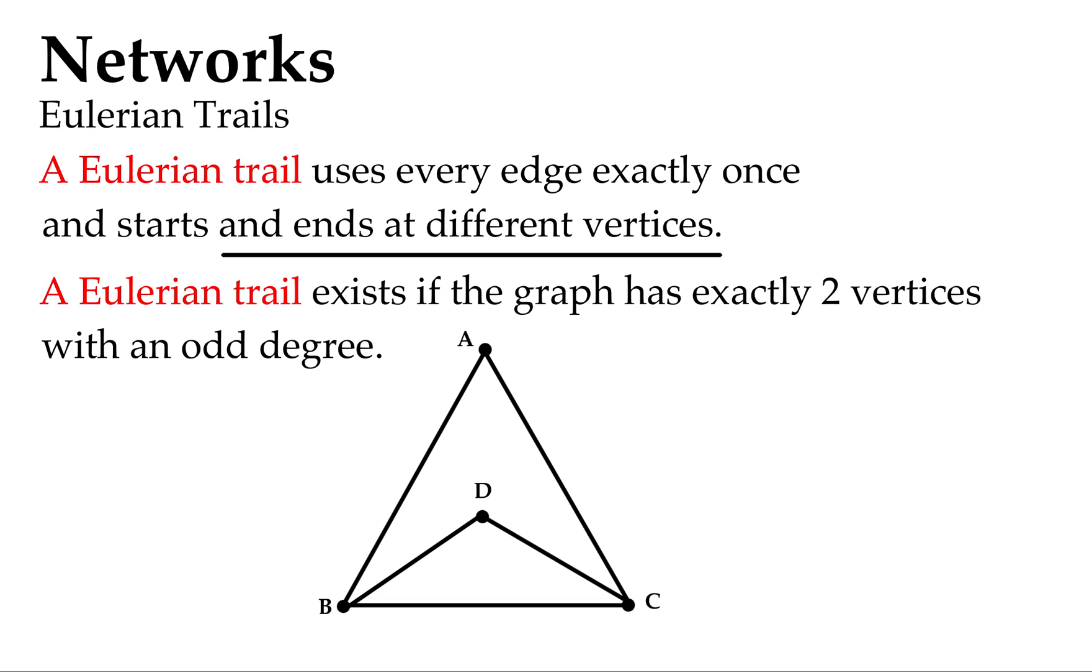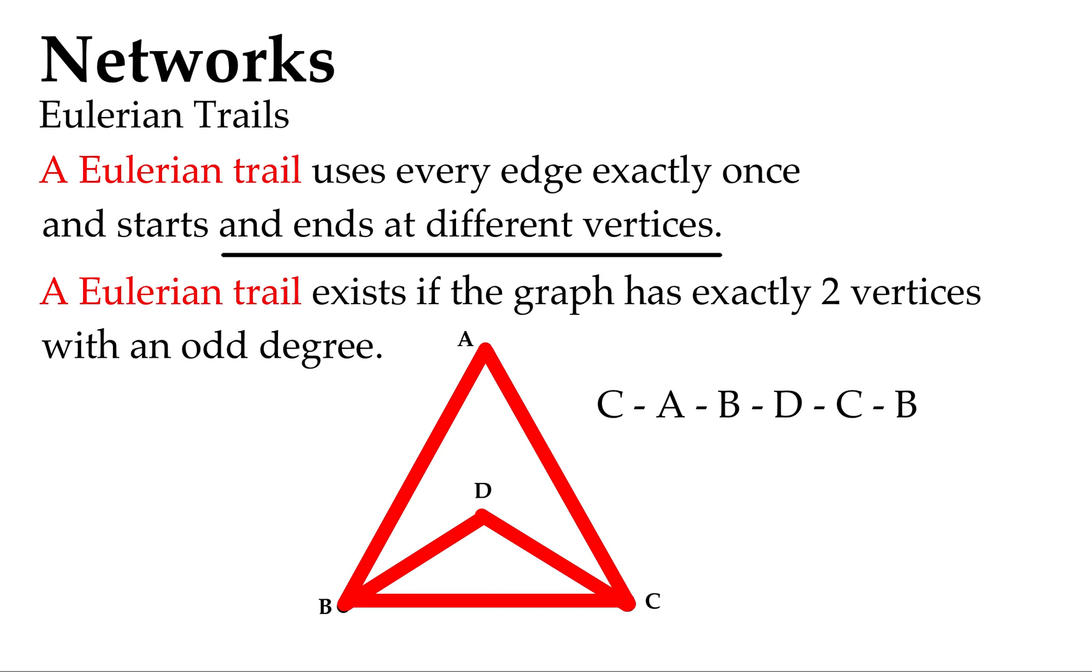So let's have a look at this diagram here and see if this is an example of a Eulerian trail. If we can make it. So we need to use every edge exactly once and start and end at a different vertex. Let's see. So that's the proposed route that satisfies as a Eulerian trail. So if we go C to A and down to B and up to D, down to C and across to B, we've used every edge exactly once.